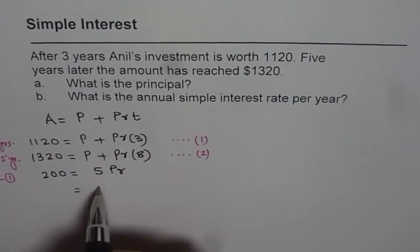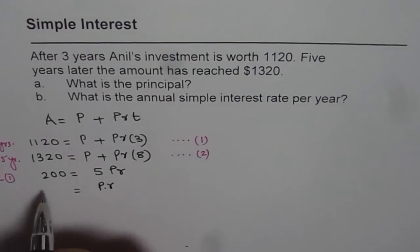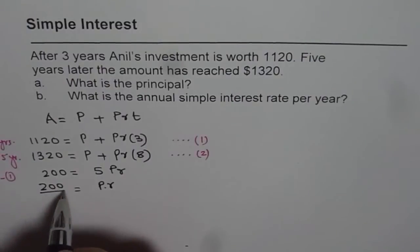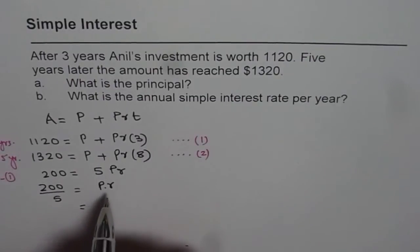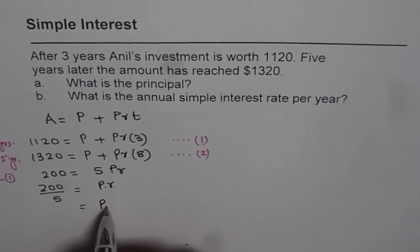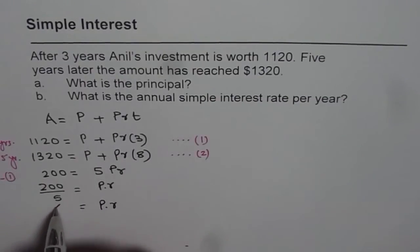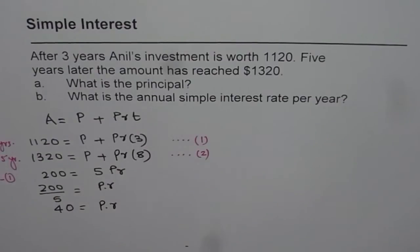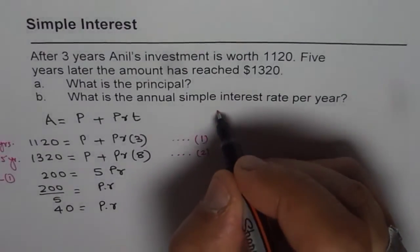So from here per year we can find what is the interest earned, which will be 200 divided by five. So we have 200 divided by five is the value of interest earned per year. So we get this as P times R as 40. So it simply means that every year interest earned is 40.